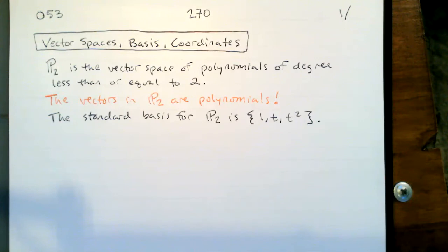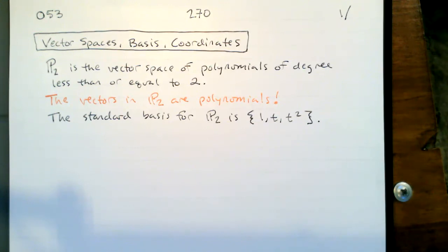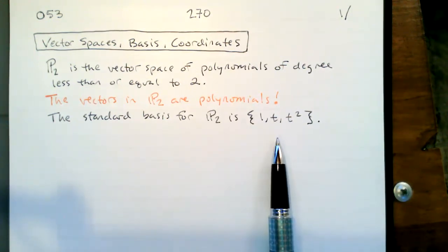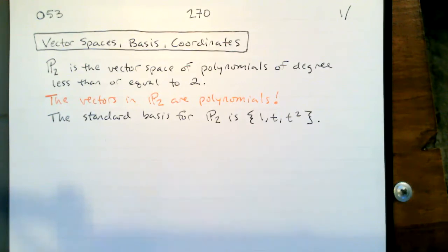We need to describe vectors with coordinates. That's the way we get a vector in not-Rn to look like a vector in Rn, by writing its coordinates. When we want to start writing coordinates, we have to make sure that we have an x-axis, a y-axis, and a z-axis — that is, we have to make sure that we have a basis. We have to have a way to describe everything in our vector space.